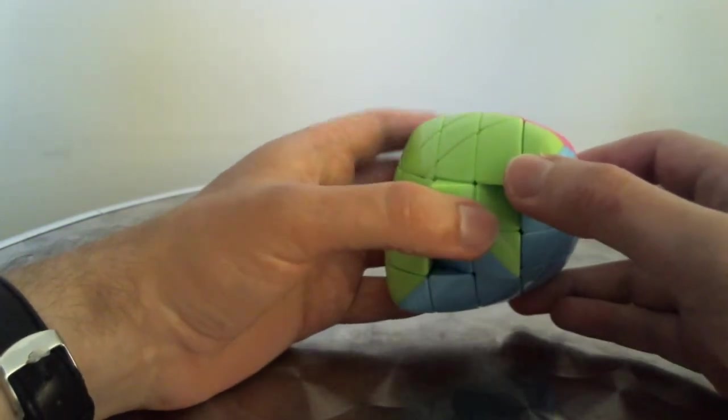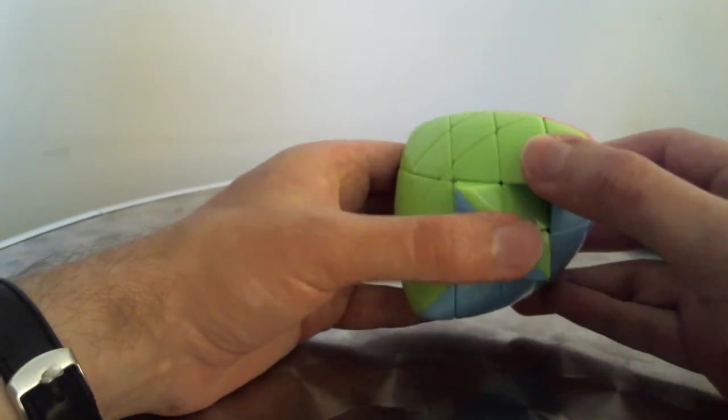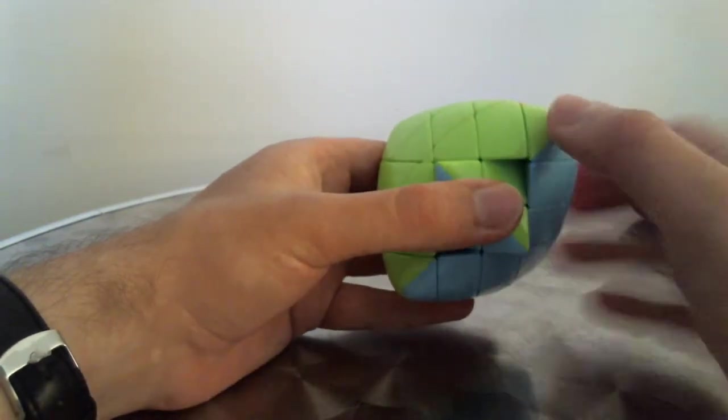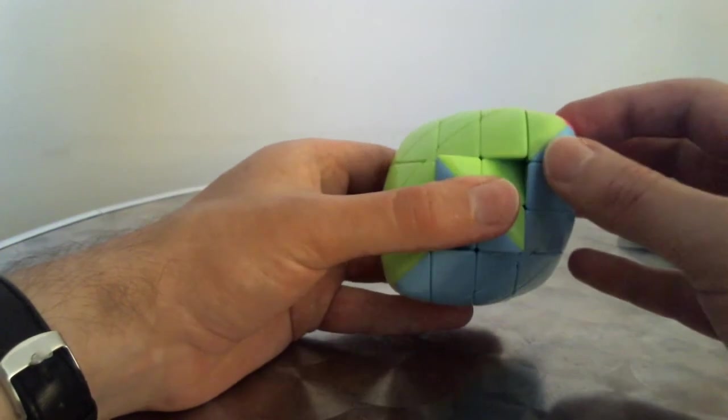Now I know that the algorithm that I use for it is the corner swapping algorithm, except that I use it in the center layers vertically. That swaps the centers in a similar way that you would normally swap the corners.